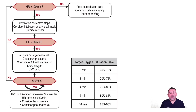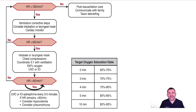If the heart rate remains below 60 despite at least 30 seconds of PPV, turn the FiO2 to 100%. If not done already, perform intubation or use a laryngeal mask, and start chest compressions at a rate of 90 compressions per minute with 30 breaths per minute — which translates to 3 compressions for every one breath given. Review after 60 seconds and insert an umbilical vein catheter (UVC). After 30 seconds of ventilation only and another 60 seconds of chest compressions with ventilations, if the heart rate remains below 60, consider epinephrine. Epinephrine should not be used until effective ventilation has been established.